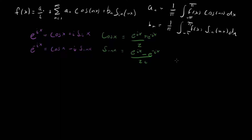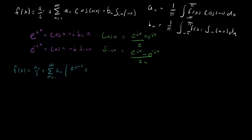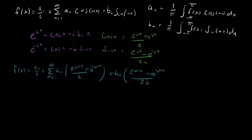Now let's substitute that back into the Fourier series equation. So we have f of x equal to a₀ over 2 plus the sum from n equals 1 to infinity, where cosine nx becomes e to the inx plus e to the minus inx all over 2, plus bₙ times e to the inx minus e to the minus inx all over 2i.